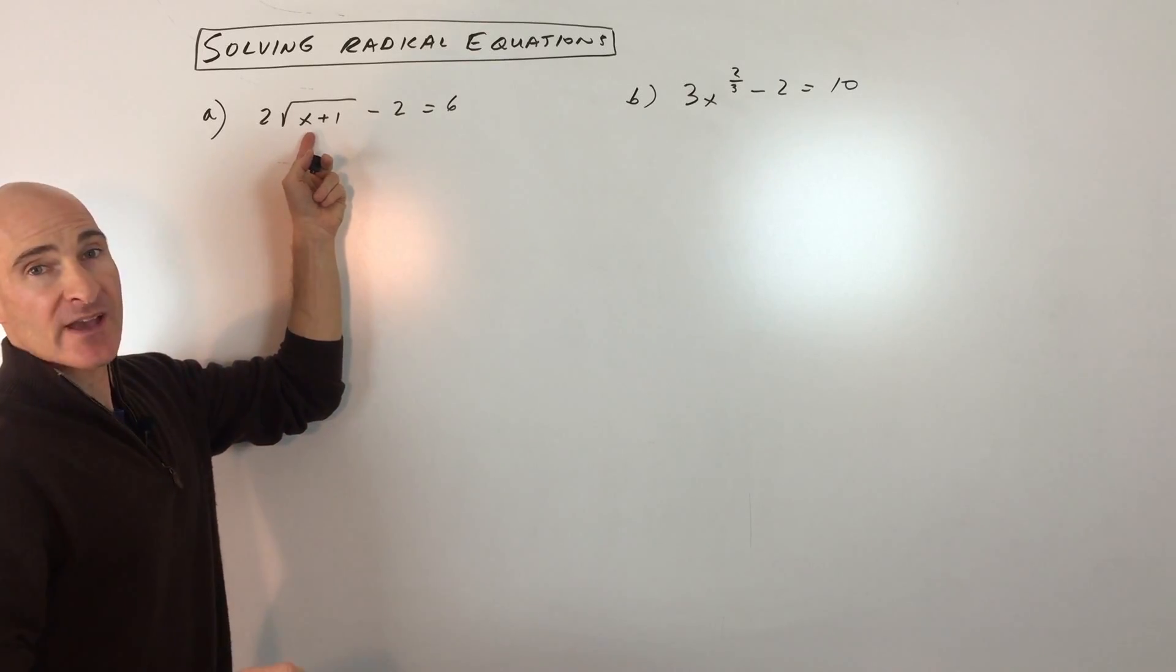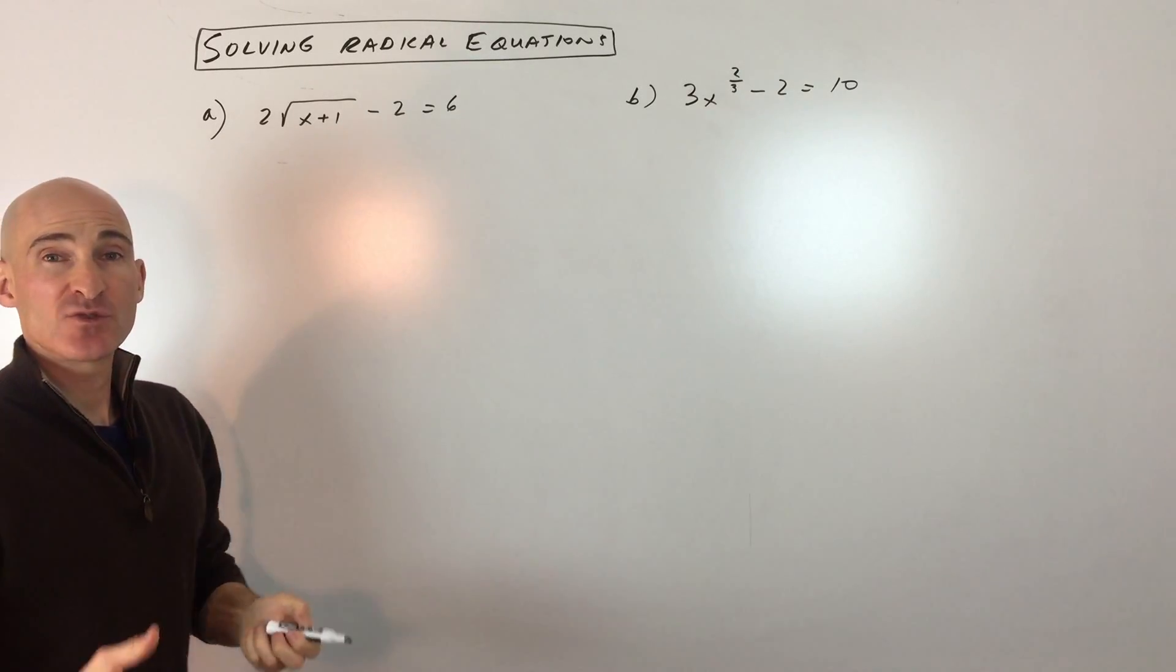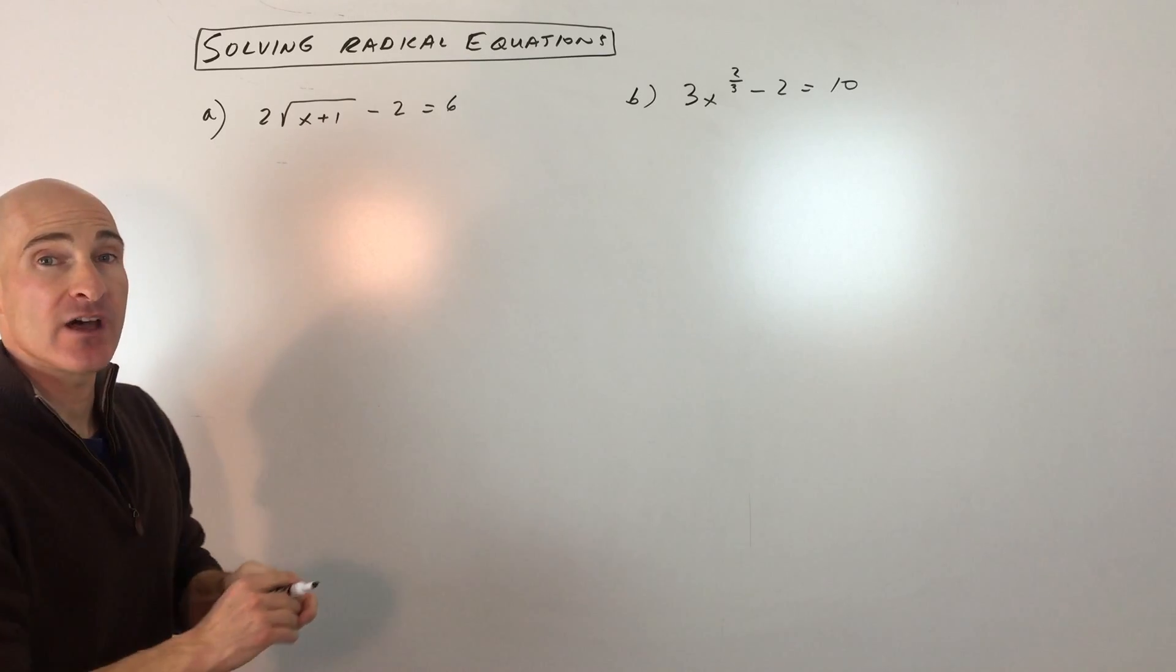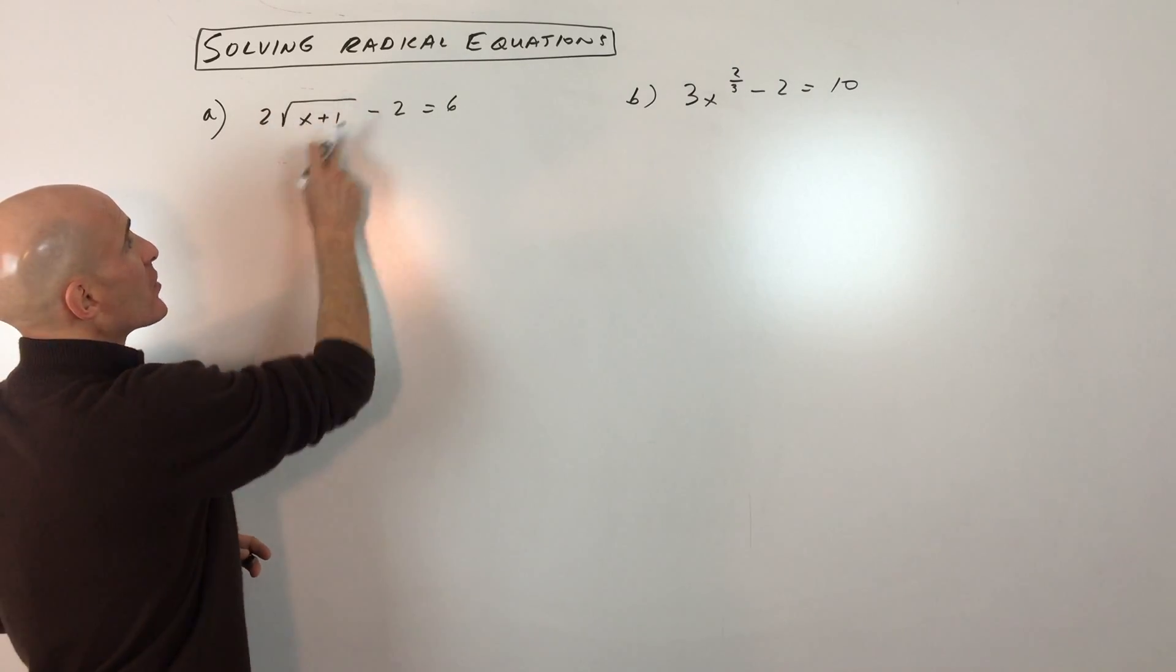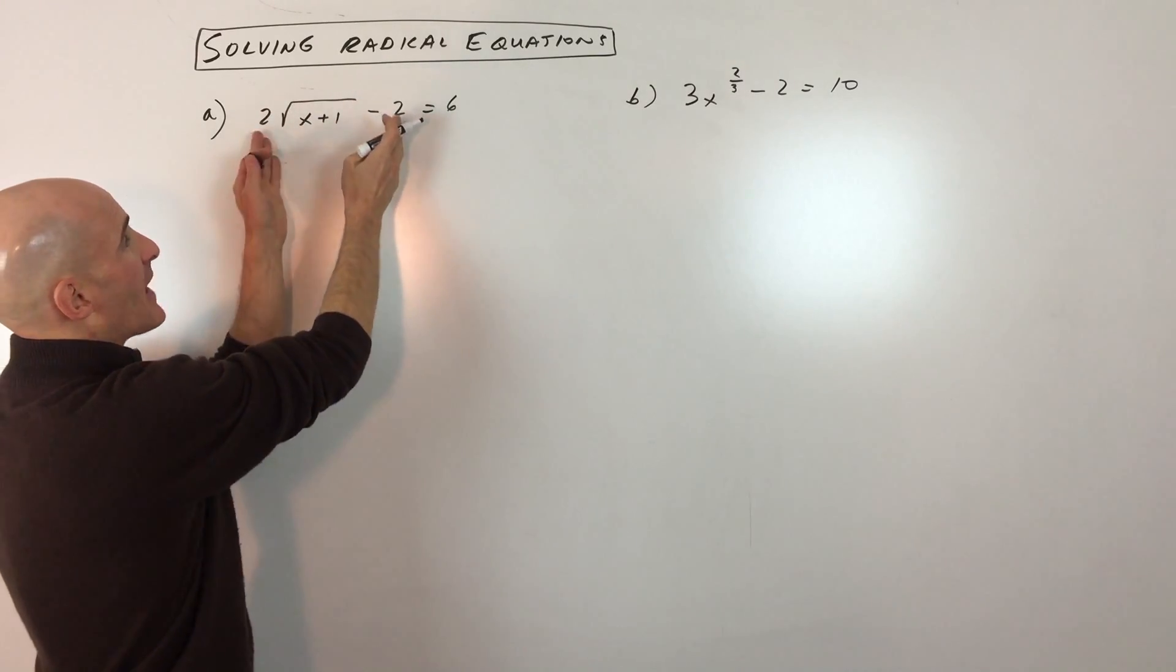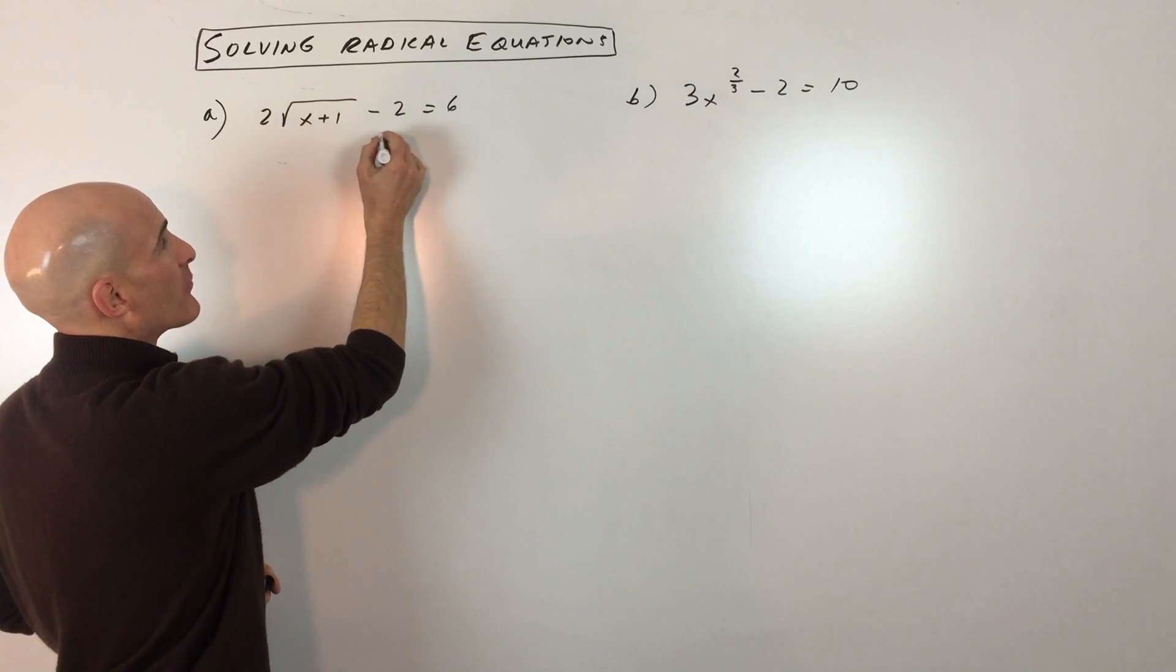Our goal is to solve for what x is, but the way that we do that is we try to isolate or get the radical by itself. So I'm going to try to get the square root of x plus 1 by itself by working from the outside in and doing the opposite operation.